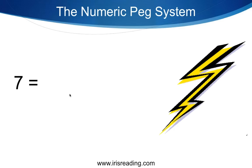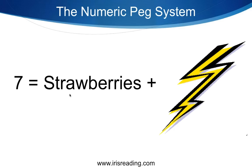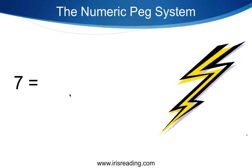Number seven is a lightning bolt, and the item is strawberries. Imagine a giant, exaggeratedly large strawberry near an open window during a thunderstorm, and lightning strikes it — it explodes, red strawberry goo all over the wall, some hitting you in the face. This only works if you're actively trying to visualize as we go over it.